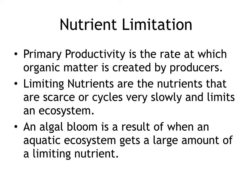Primary productivity is the rate at which organic matter is created by producers. A limiting nutrient is a nutrient that is scarce or cycles slowly and limits an ecosystem. An algal bloom results when an aquatic ecosystem receives a large amount of a limiting nutrient. A limiting nutrient limits growth — if there's enough of it, you'll have a large amount of growth; if there's not, you won't.